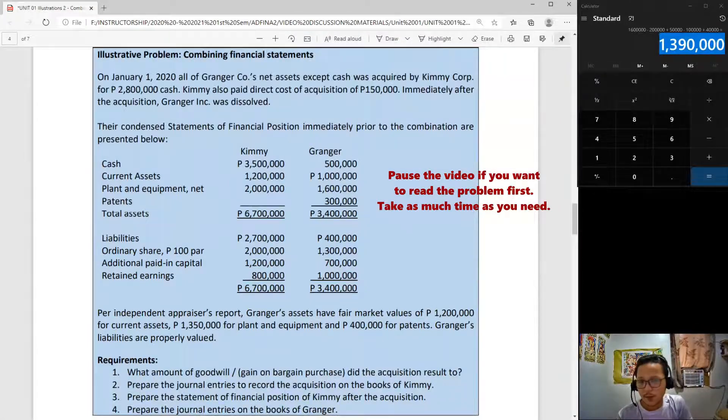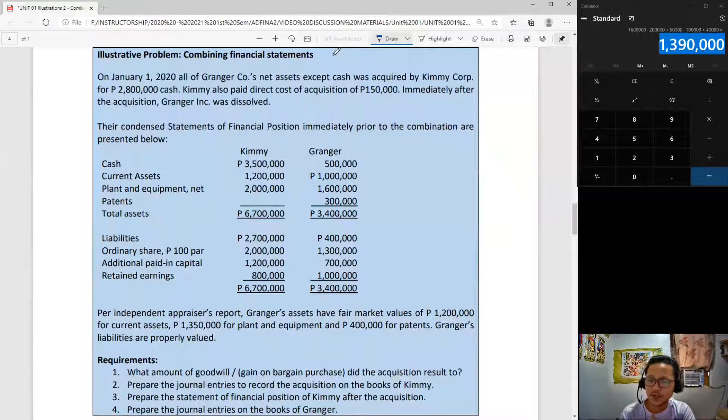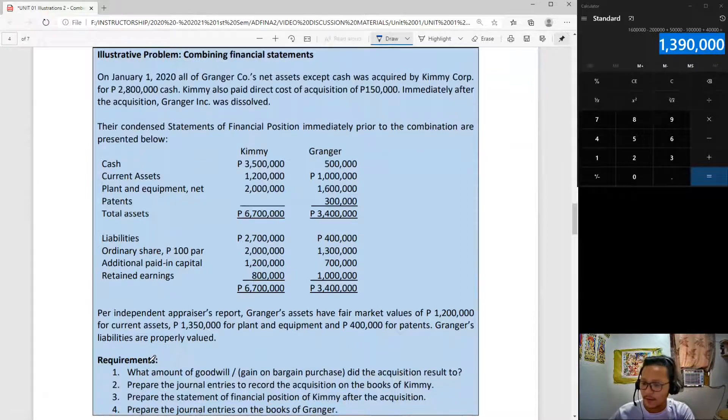This second problem is about combining financial statements. My objective is to present a step-by-step process on how to do that exactly, because students tend to get confused on what to do next. The best way for you not to get confused is to simply have a step-by-step guide.